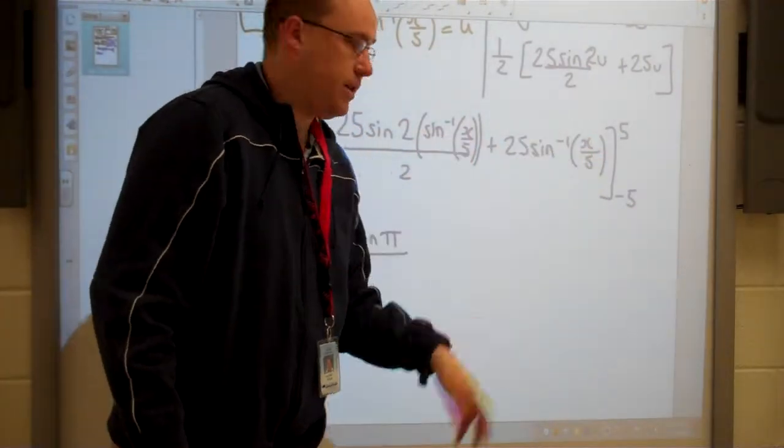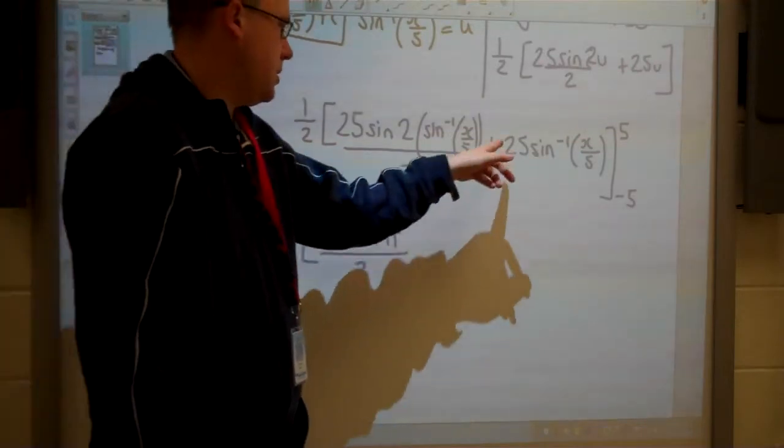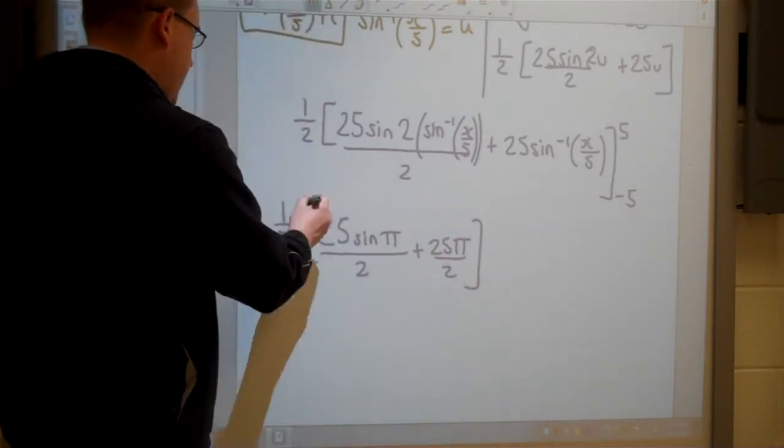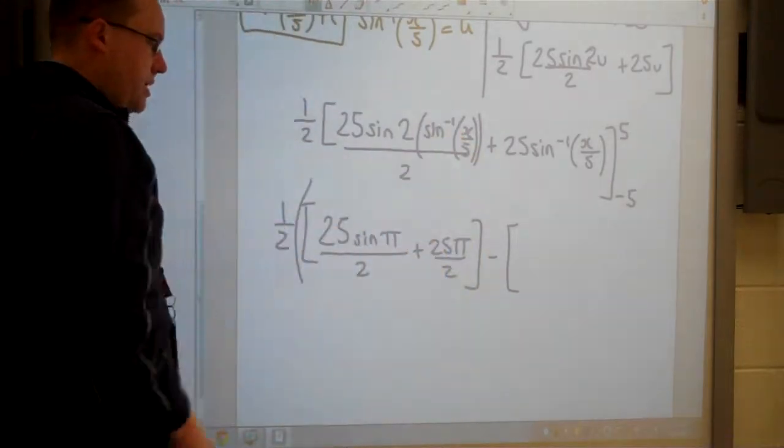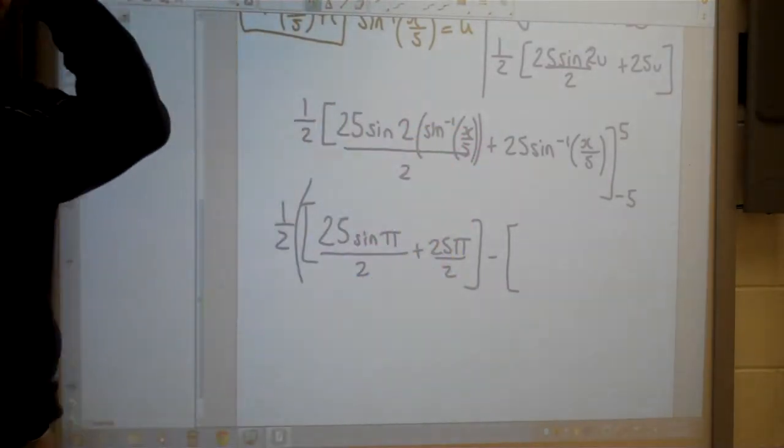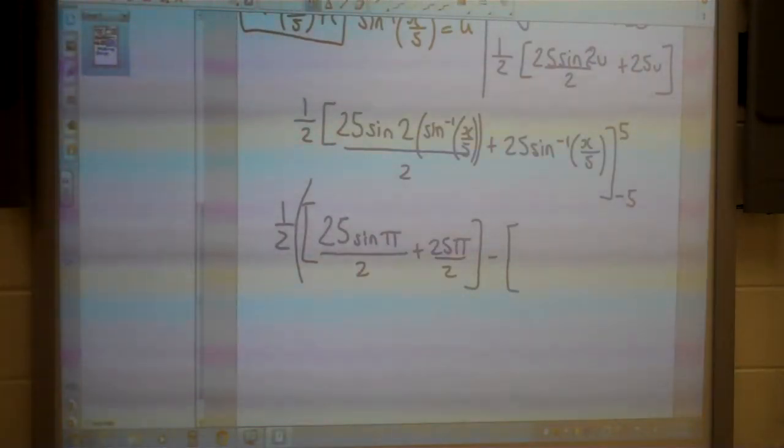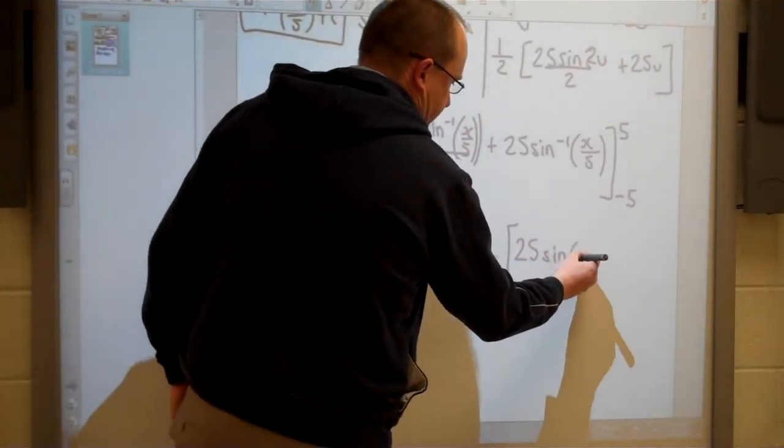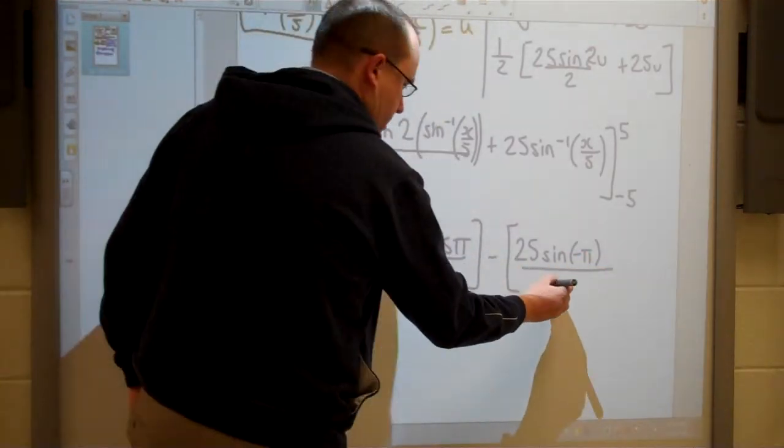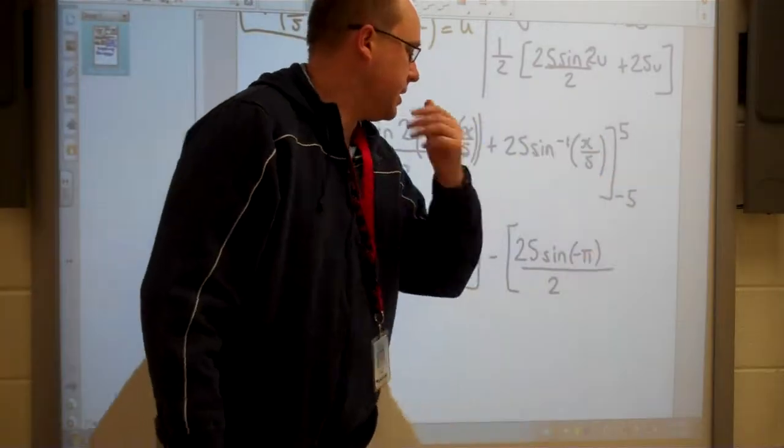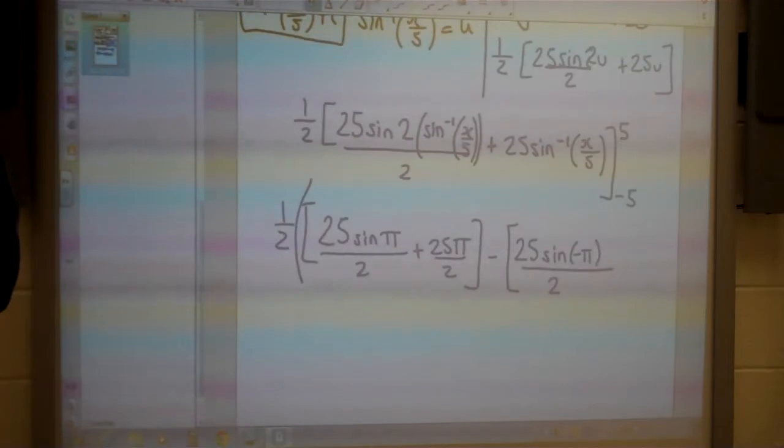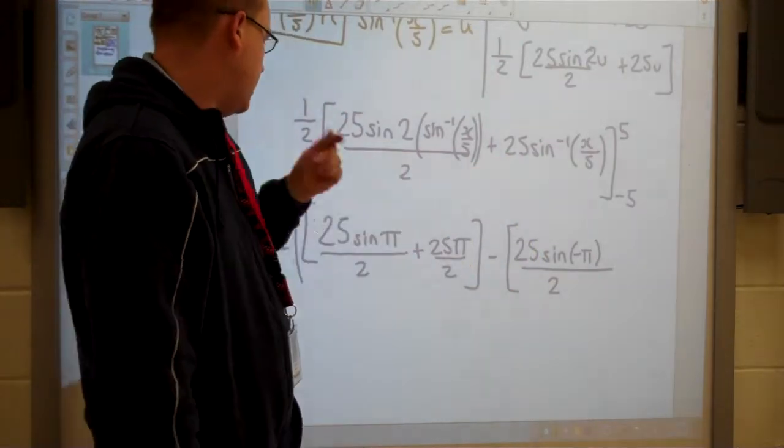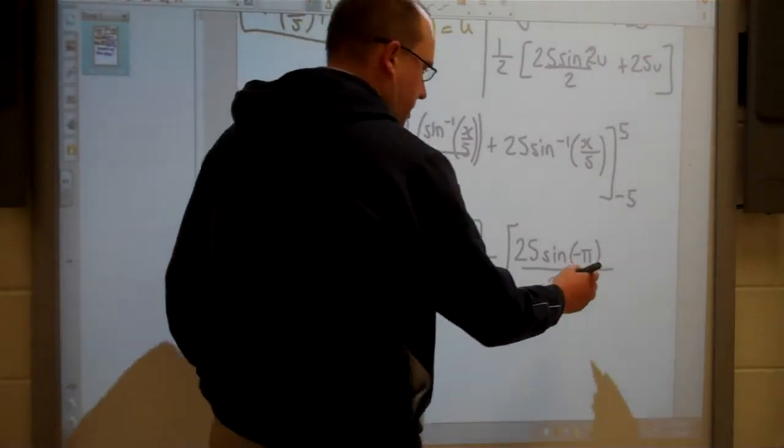Same thing with 5 here. 5 over 5 is 1. So inverse sine of 1 is going to be pi over 2. And 25 times pi over 2. I can just put that, subtract. When we plug in negative 5 the major difference is we're going to get negative 5 over 5 here which is negative 1. When does sine equal negative 1? Well that's going to be negative pi over 2. And then 2 times negative pi over 2 is going to become negative pi. And the same thing for this one. When we substitute in negative 5 into this, negative 5 over 5 is going to be negative 1. Inverse sine of negative 1 is negative pi over 2. And 25 times negative pi over 2 is going to be negative 25 pi over 2.